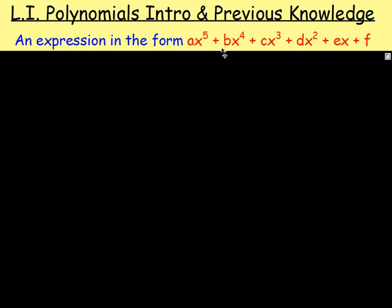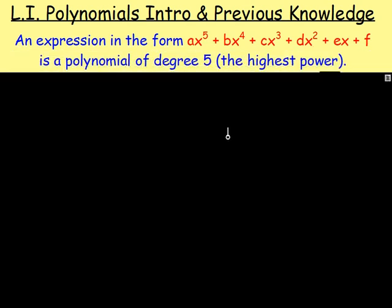For example you could have 3x to the power of 5, add 12x to the power of 4, minus 7x to the power of 3 and so on. So expressions like that are known as polynomials. You would say this as a polynomial of degree 5 because 5 is the highest power. You can see there's an x to the power of 5, there's not an x to the power of a number bigger than that. So that is a polynomial of degree 5.